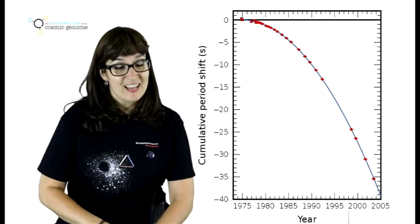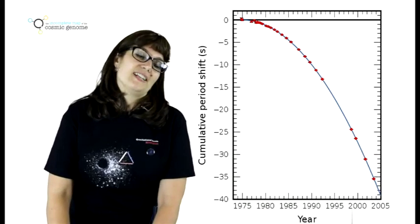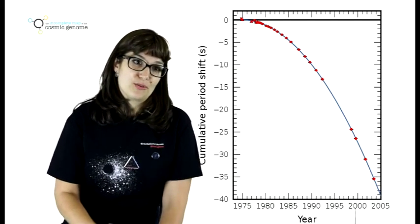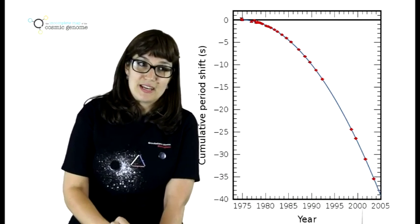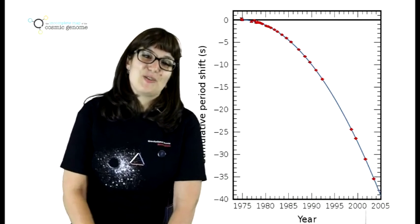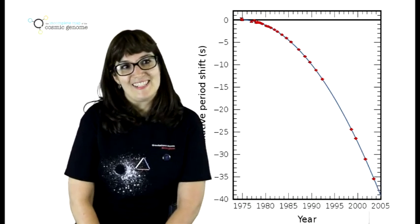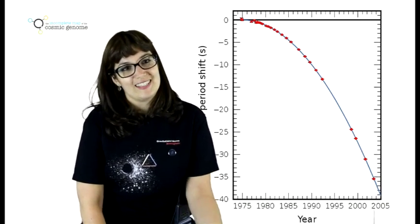Whereas if you believe in Newton's theory and think Einstein is wrong, they're not emitting gravitational waves and should just stay in the same kind of orbit. They monitored the system over around 10 years and found that the gravitational wave prediction model predicted the results to within half a percent. And so Hulse and Taylor won the Nobel Prize in 1993 for the first indirect detection of gravitational waves.